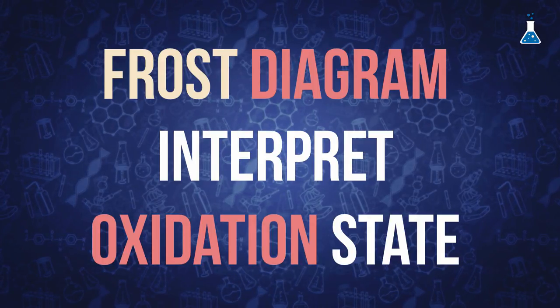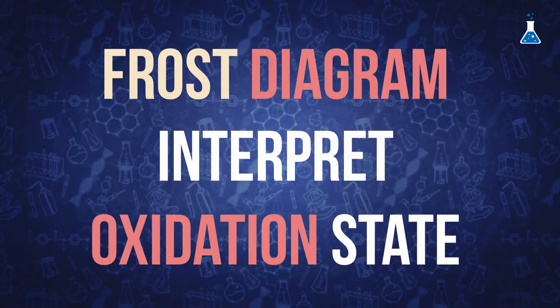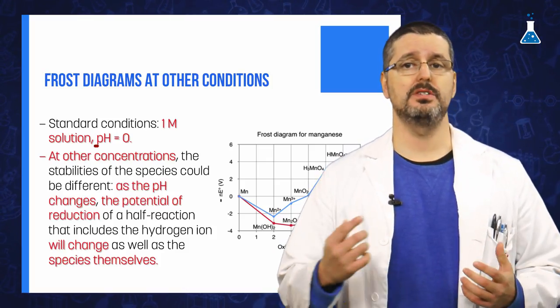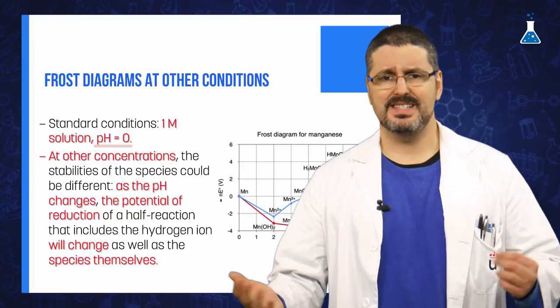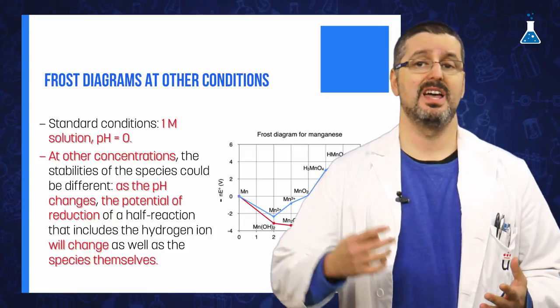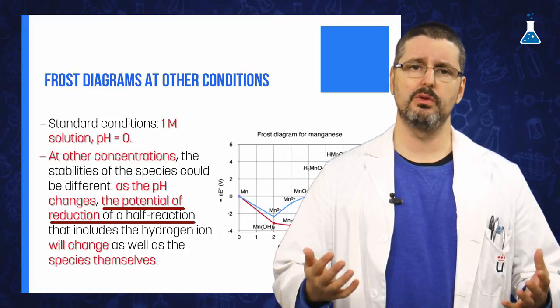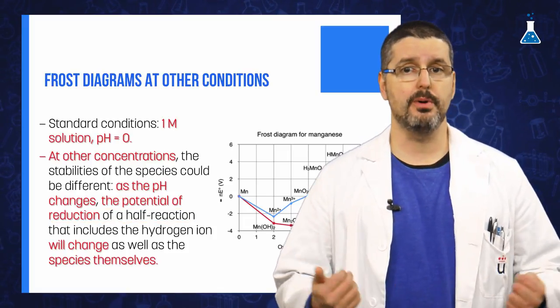But this interpretation has the drawback that we are comparing free energy data from standard conditions, that is, one molar solution at pH of zero. But for other concentrations, the relative stability of the different species could be different. As the pH changes, the potential of the reduction of a half reaction that includes the hydrogen ion will also change, and even more important, the species themselves will change.